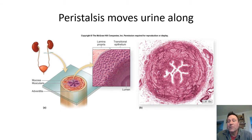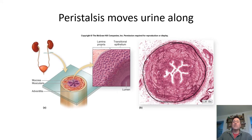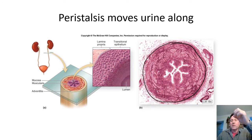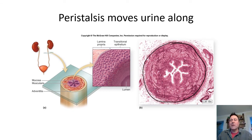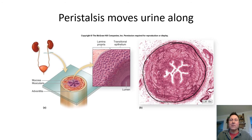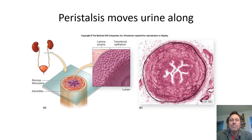Your ureters come down from each kidney and move urine down by squeezing like peristalsis — a wave of muscle. When the renal pelvis becomes filled with urine, it'll squeeze and move the urine all the way down to the bladder. When you're drinking a lot and making a lot of urine, it'll come every few seconds; when you're sleeping and not drinking much, it'll come every few minutes. These waves of peristalsis squeeze the pee down; it doesn't just fall by gravity.